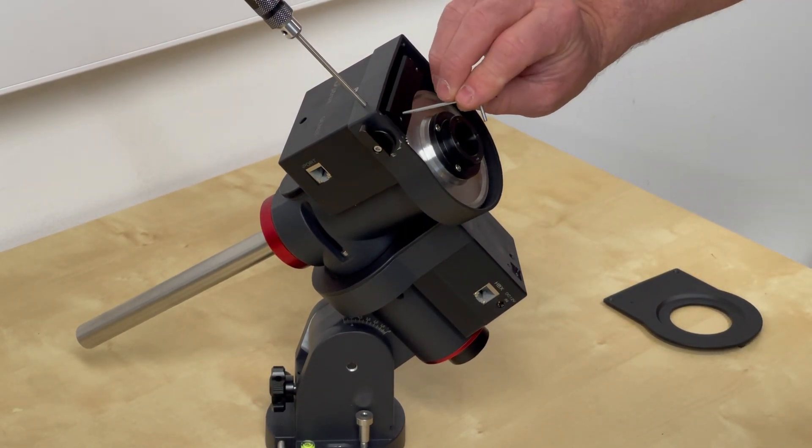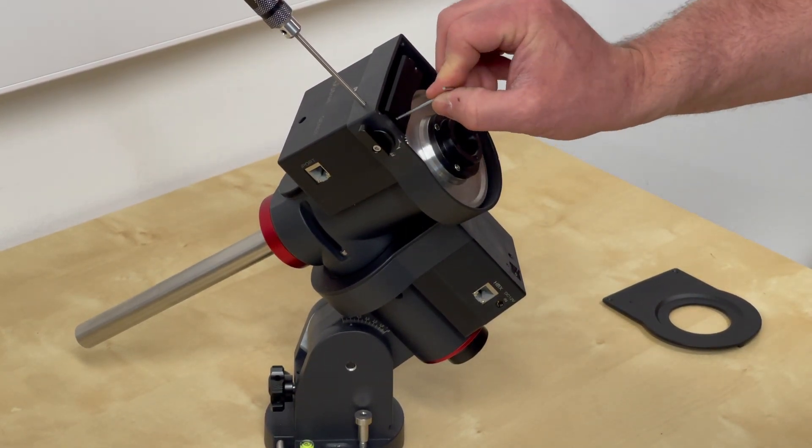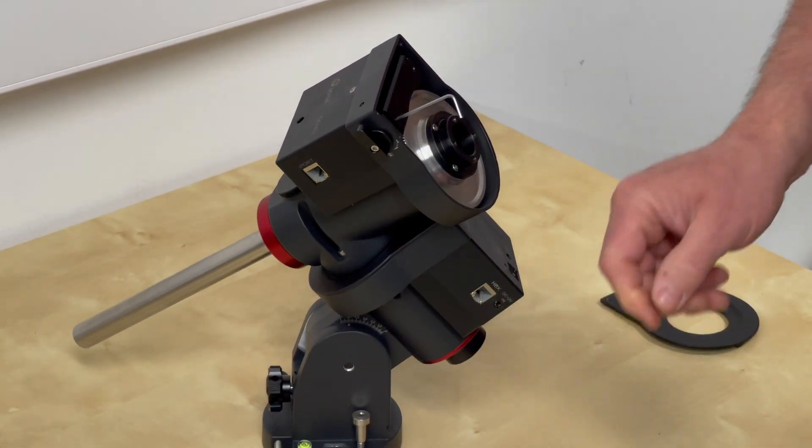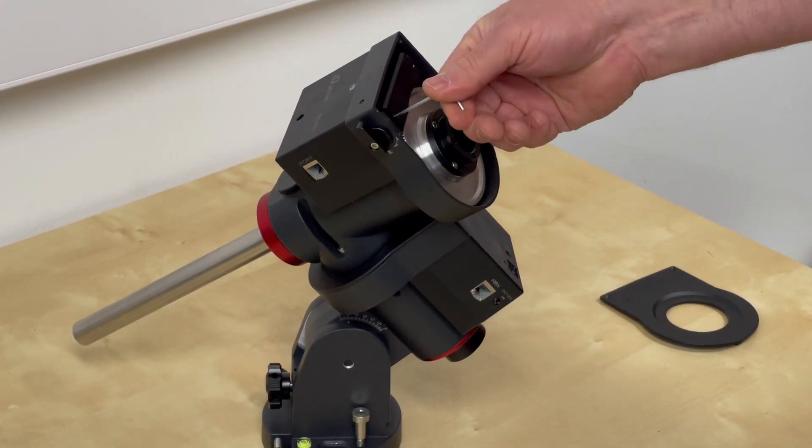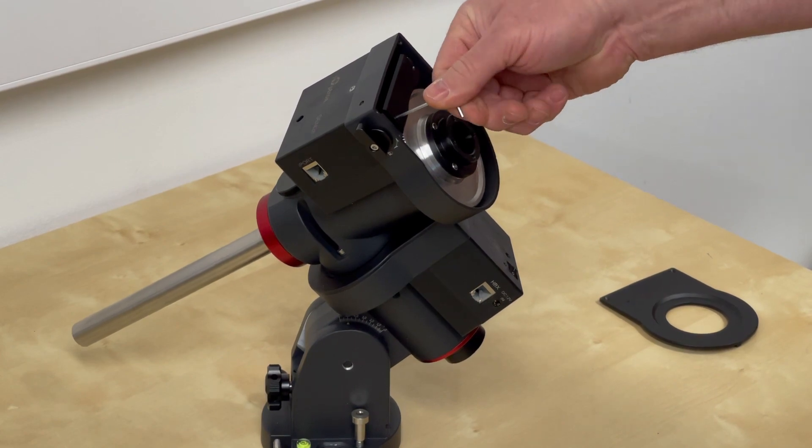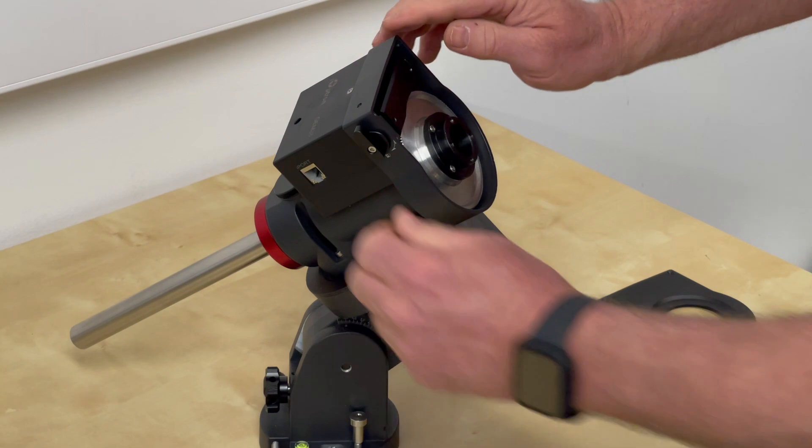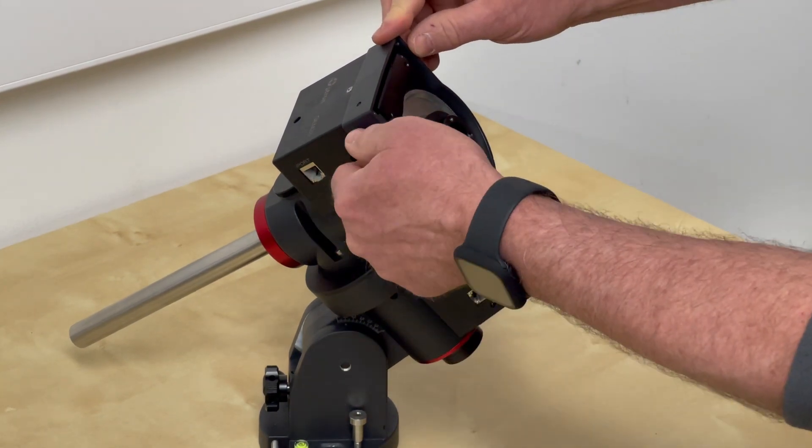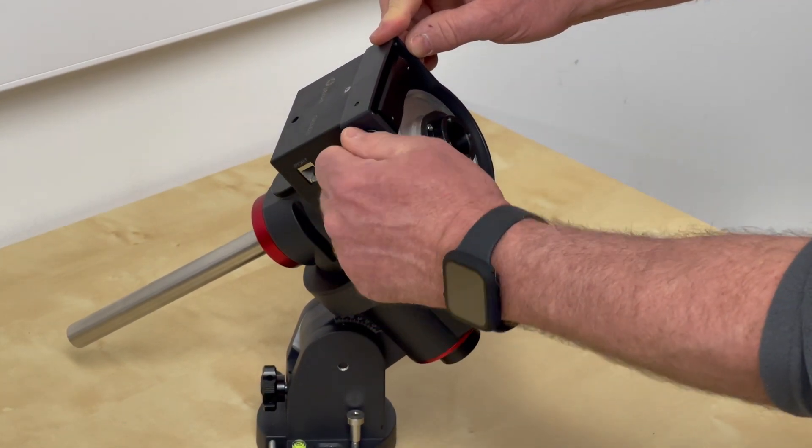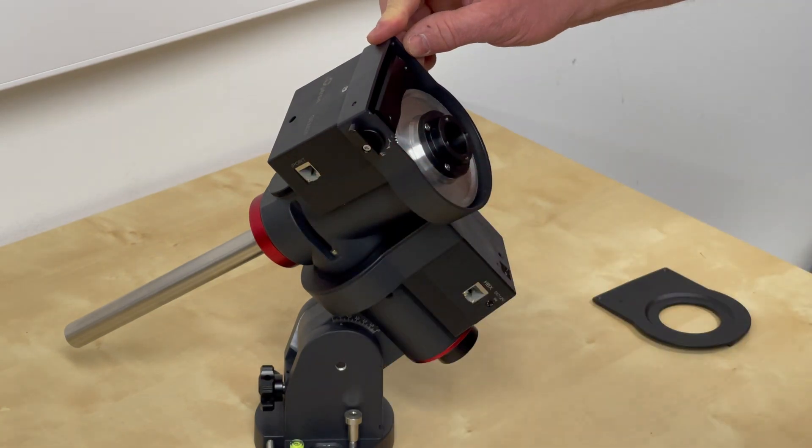I would then put the 2mm Allen key in the top plate, remove this one and do this up. Just nip it up again, not over tight. Take it out and we should then find that this mechanism works absolutely smooth. There we go.